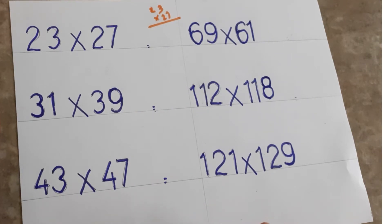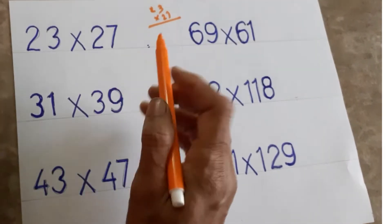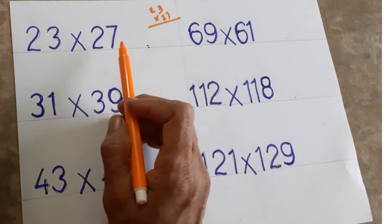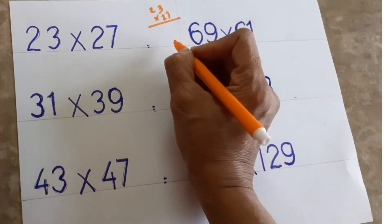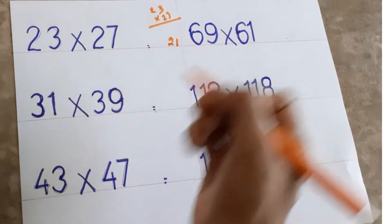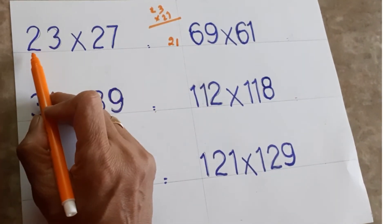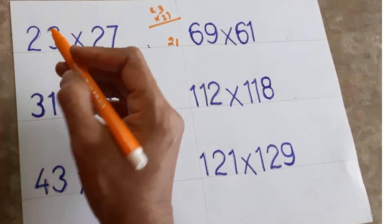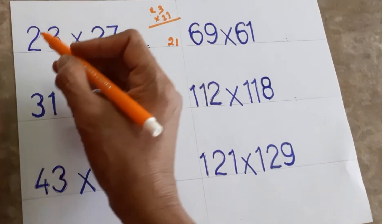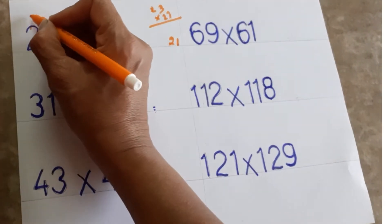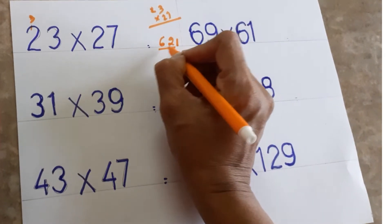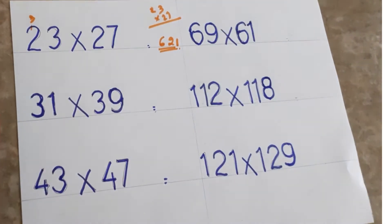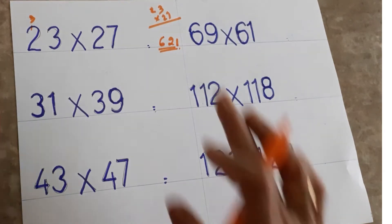For 23×27: look at the units place — seven and three. Seven threes are 21, write 21. Then look at the tens place: two. Whatever number is there, take the next number — two means next is three. Two threes are six. So the answer is 621. You can check with your calculator — it will be the same.